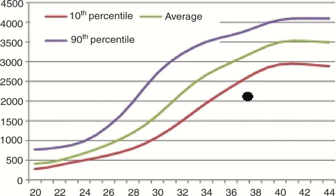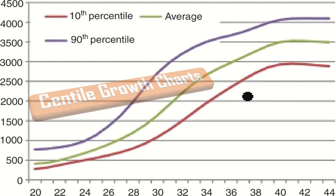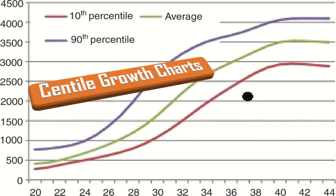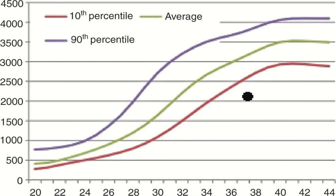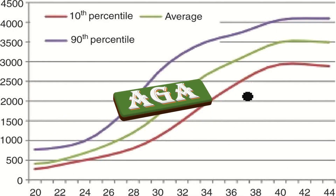Any measurement obtained, whether biometry or estimated fetal weight, can only be interpreted when plotted on a growth chart to determine both the percentile of the measurement and any change in the growth trajectory. An appropriate for gestational age fetus is one whose size is within the normal range for its gestational age, typically defined as between the 10th and 90th centiles.